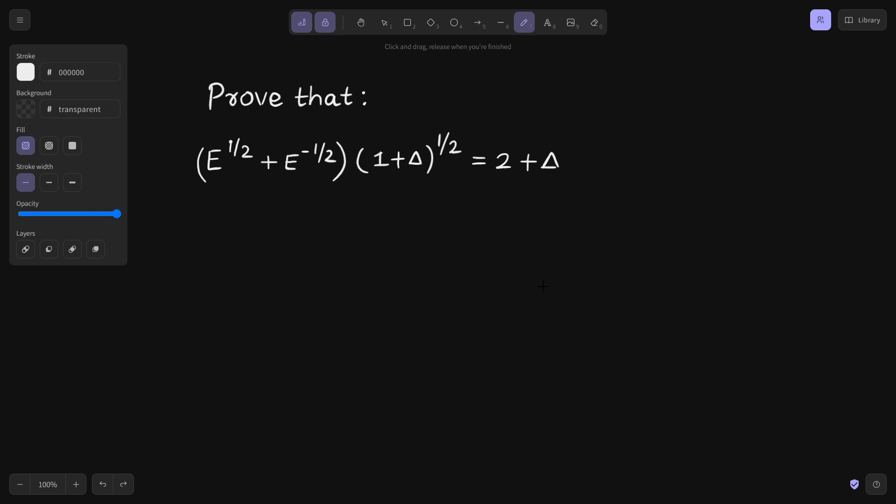So we know the relation between shift operator and forward difference operator. E equals to 1 plus delta.